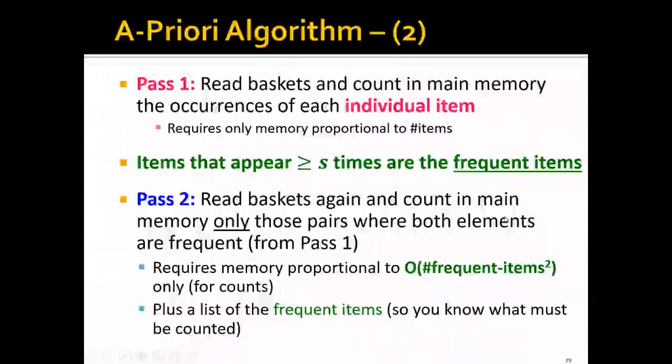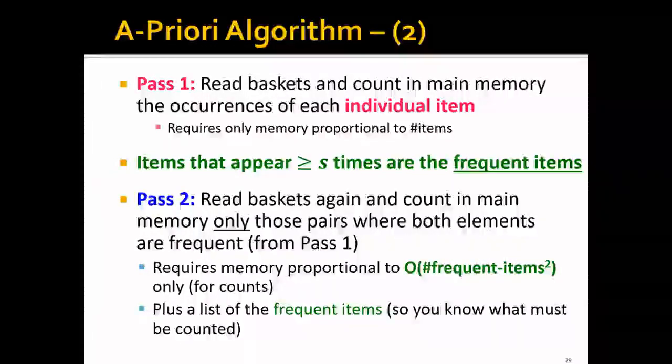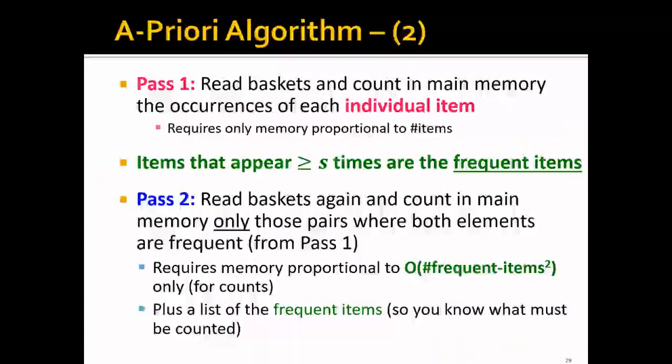So how does the A-Priori algorithm find the frequent pairs? It goes like this. In the first pass, it will read the baskets and count in memory the occurrences of each individual item. And note that this would require only the memory proportional to the number of items. So it is very cheap compared to the original naive algorithm, which takes about the square of the number of items. And the items that appear more than S times are called the frequent items.